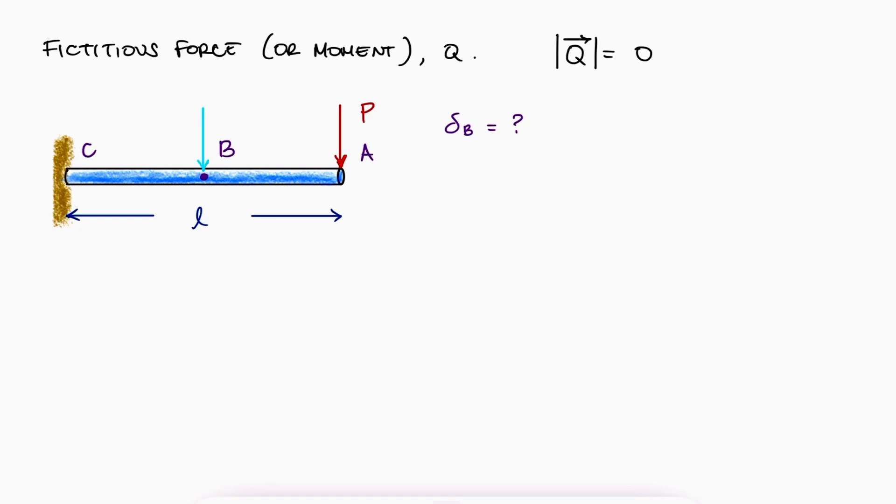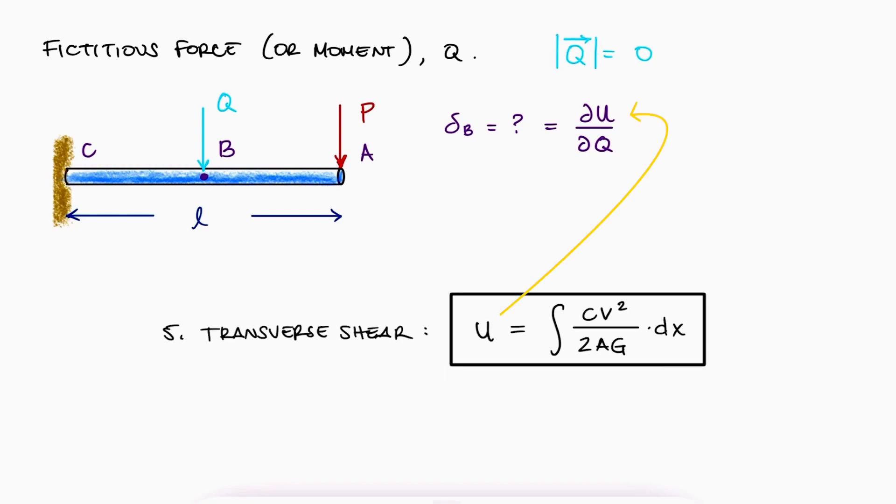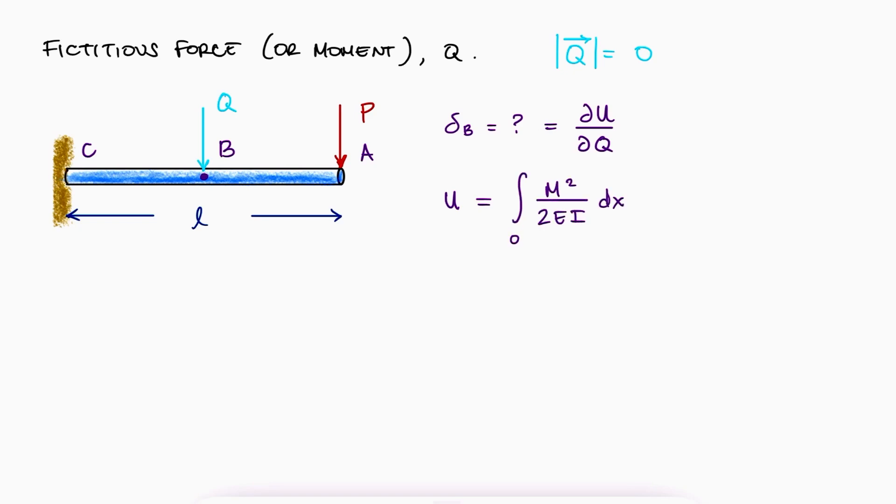Since the only load p is located at A and not B, we would have to add a fictitious force q, applied at B, in the direction of the deflection that we want to calculate, to be able to use Castigliano's theorem. Knowing that the transverse shear energy will not contribute much to the total deflection of the beam, the only energy term we should probably use here is that due to bending. To calculate the deflection at B, which is where q is located, we would take the partial derivative of that energy with respect to q, not p. And just like we did before, we can rewrite the partial derivative of the integral as the integral of the partial derivative. This simplified expression for calculating the deflection due to bending would always be the same. By the way, you can do this simplification for axial loading, torsion, transverse and direct shear too.